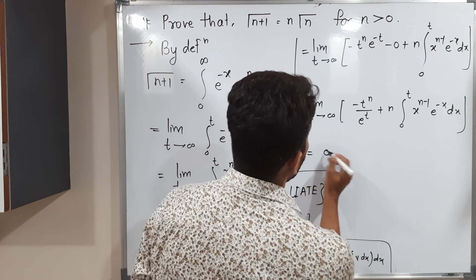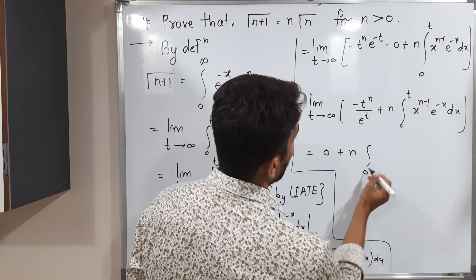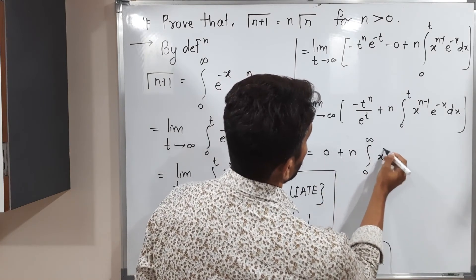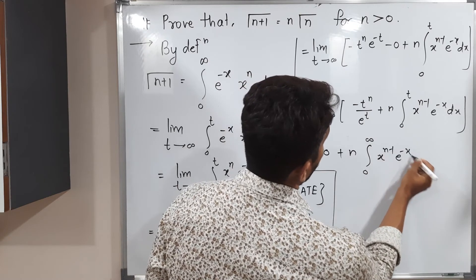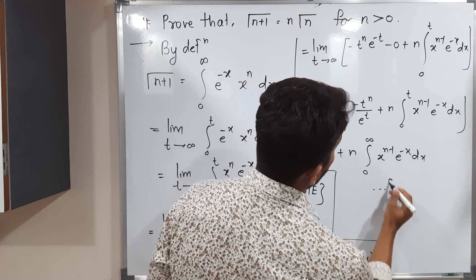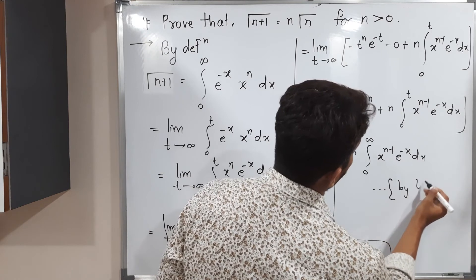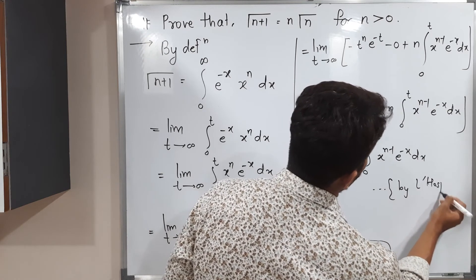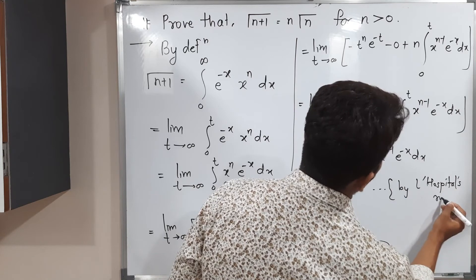So that's why I am writing directly here. So this is equal to 0 plus n. Here we have to put t equals infinity. So actually I use L'Hospital's rule, so I should mention by L'Hospital's rule.